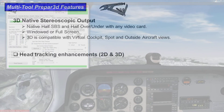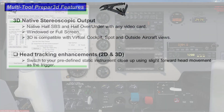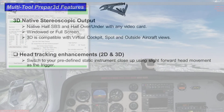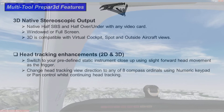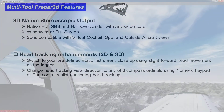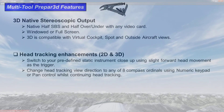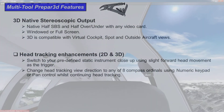There are head tracking enhancements that work both in 2D and 3D. These include being able to, with a head movement, switch to a close-up of your instruments that you've predefined using some other features in this program. The compass ordinals are defined so you can switch quickly to a left or right wing or to rearward view, and still use the movement of your head for tracking.